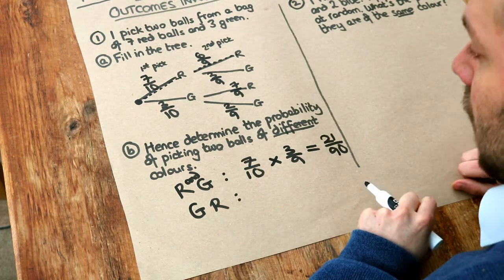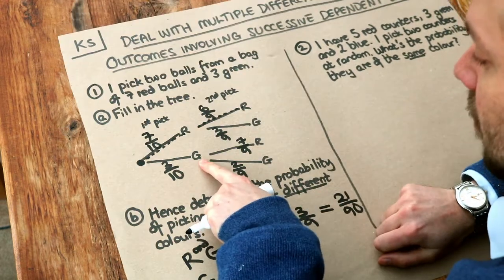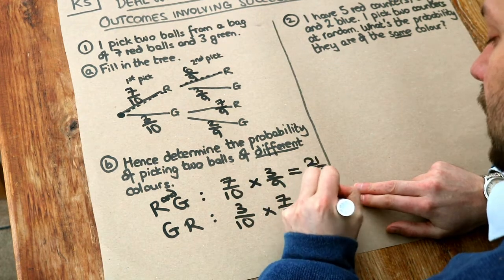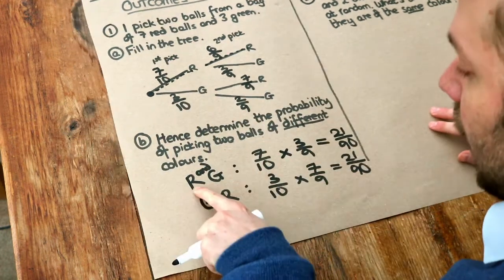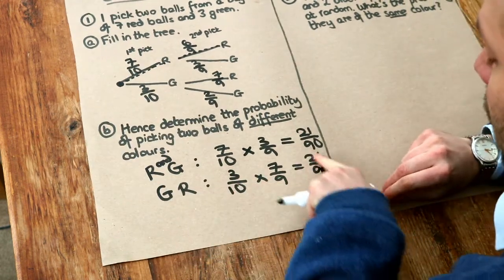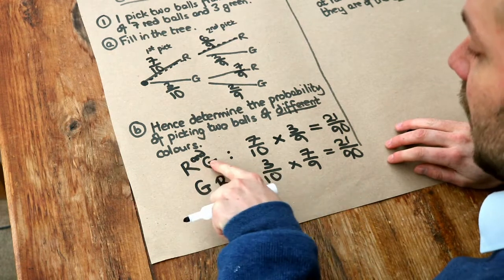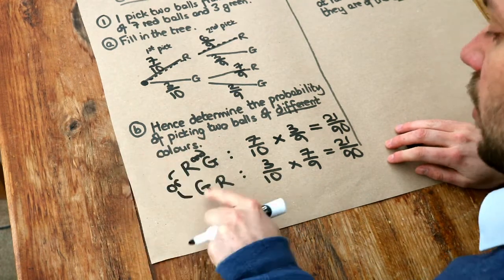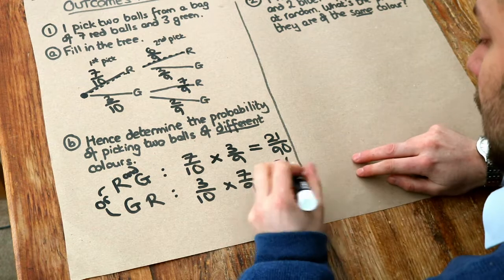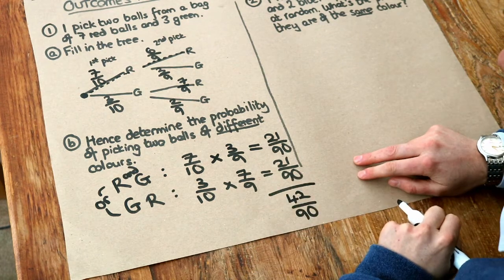What about green followed by red? The probability of the first being green is three tenths, and if we picked green first, the probability of the second being red is seven ninths. Multiplying together gives 21 over 90 again. A general point: if you have the same colours but in a different order, you get the same probability. Now we want the probability of red-green OR green-red. Using the word 'or' in probability means we add: 21/90 plus 21/90 equals 42 over 90, which is the final answer.